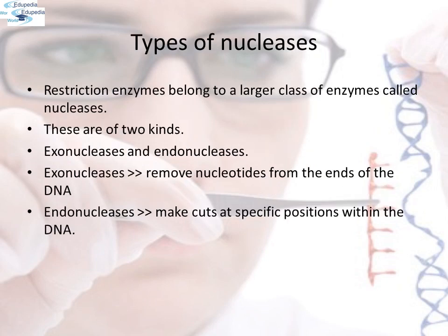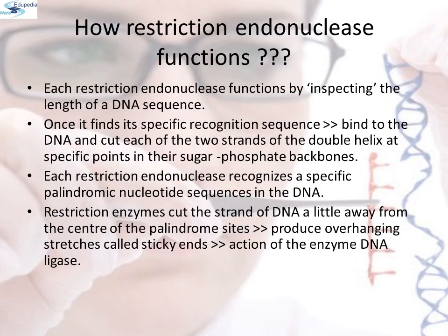Types of nucleases: restriction enzymes belong to a large class of enzymes called nucleases. These are of two kinds: exonucleases and endonucleases. Exonucleases remove nucleotides from the ends of the DNA, whereas endonucleases cut at specific positions within the DNA.